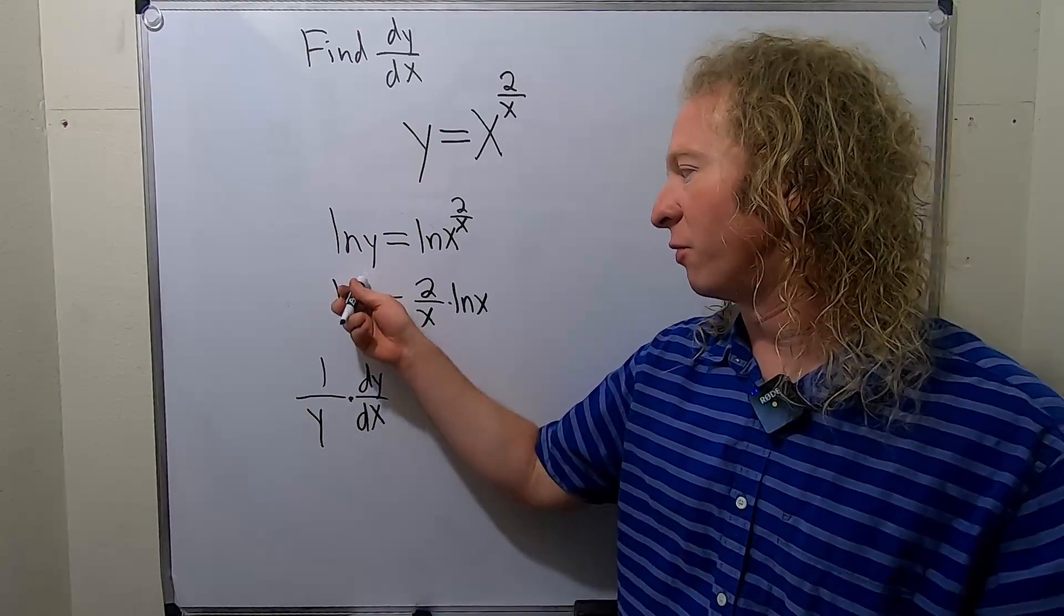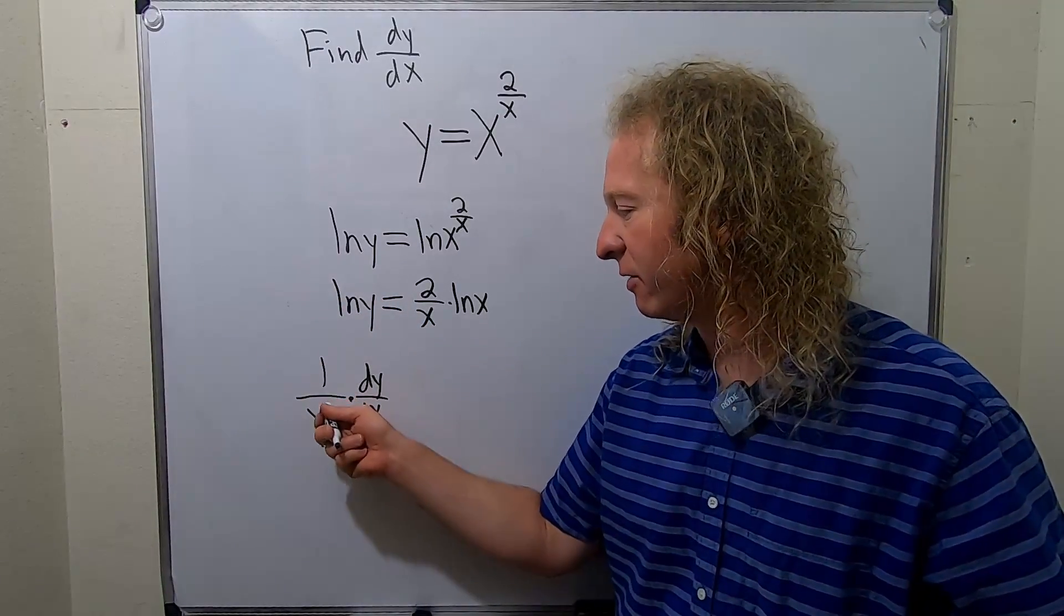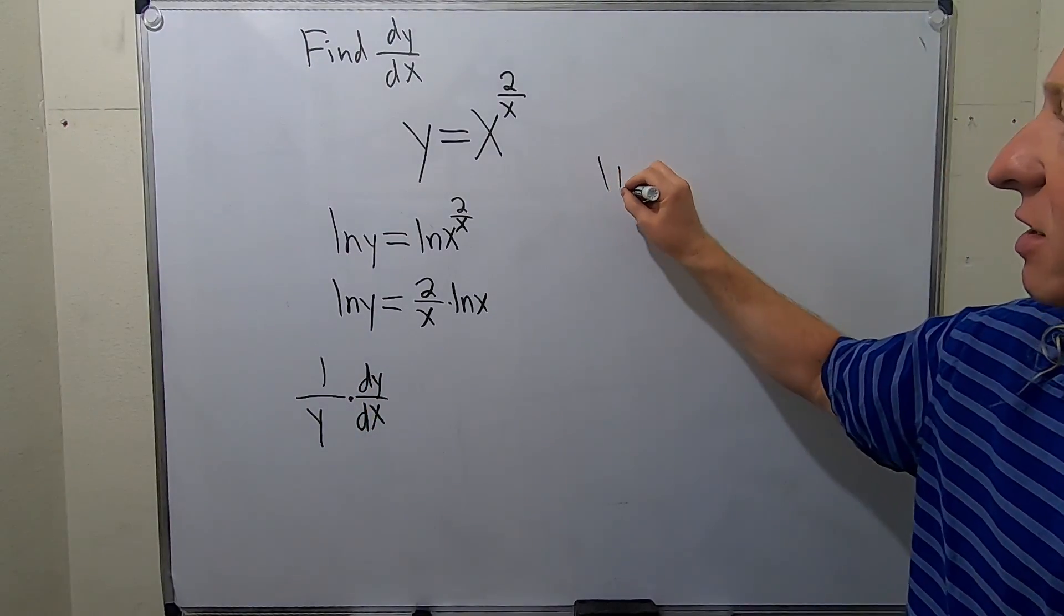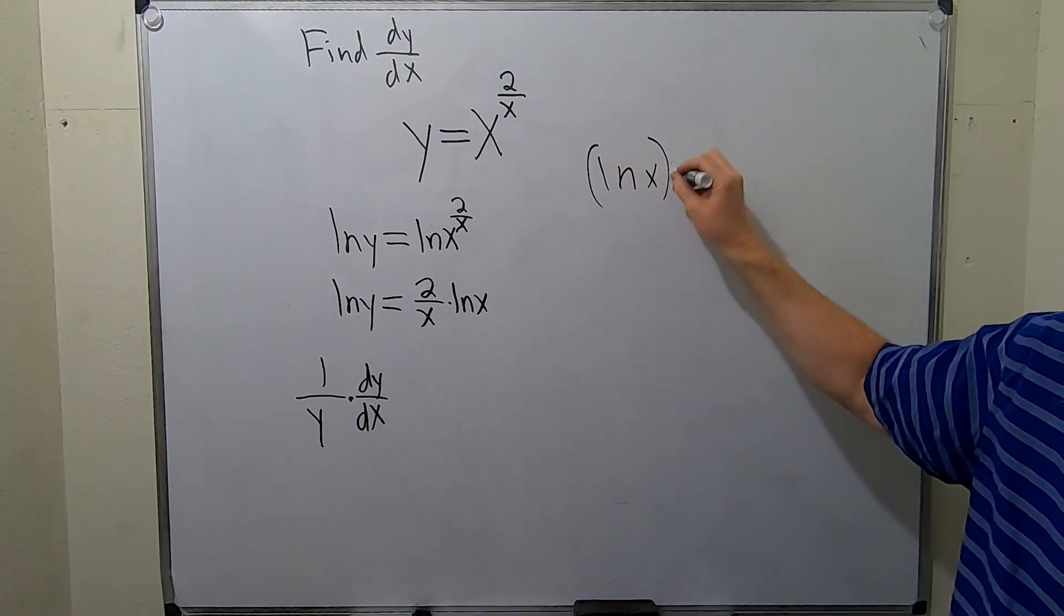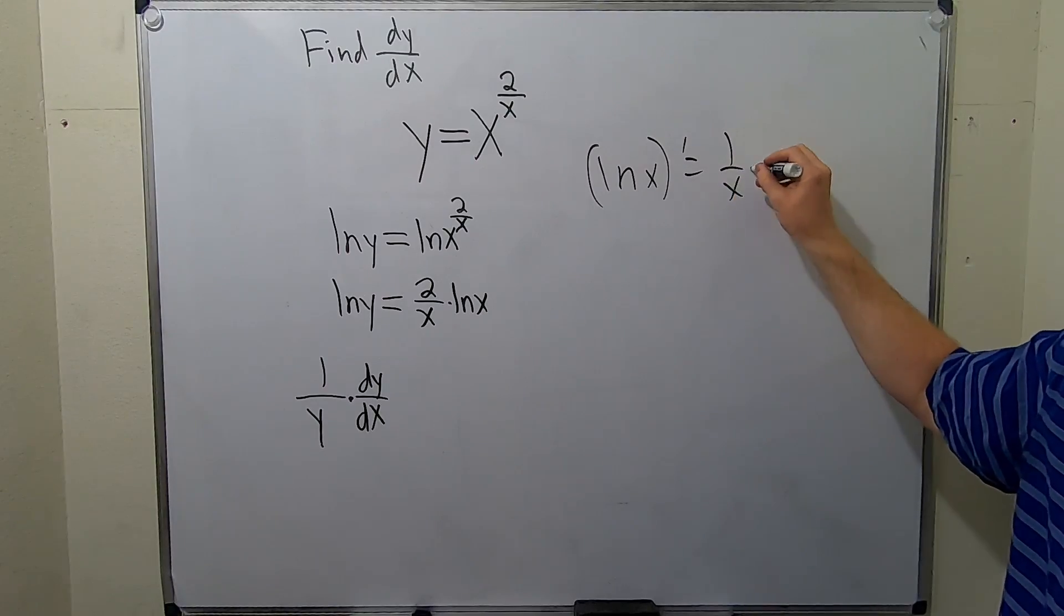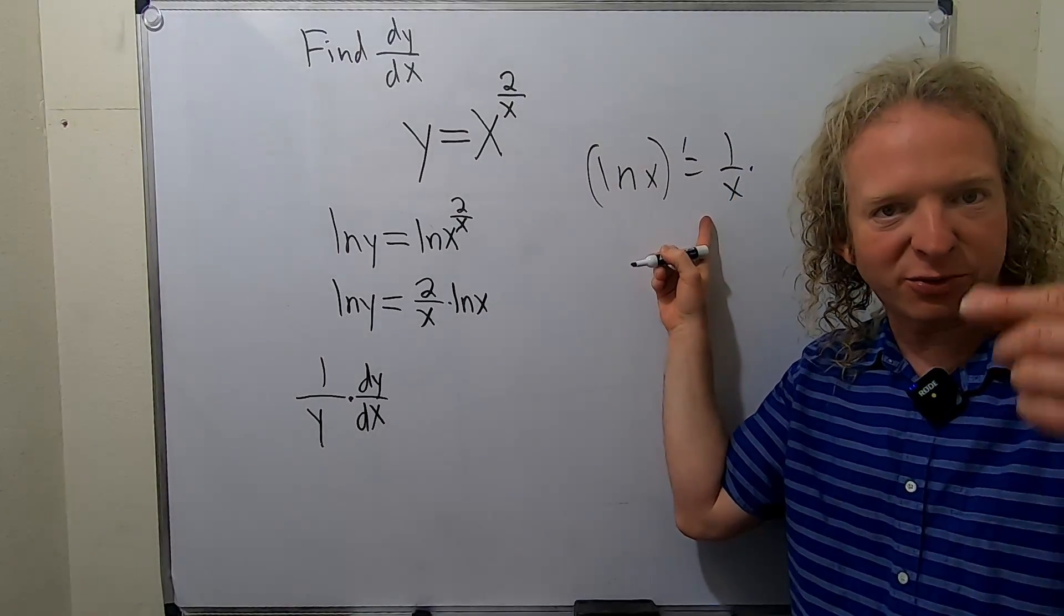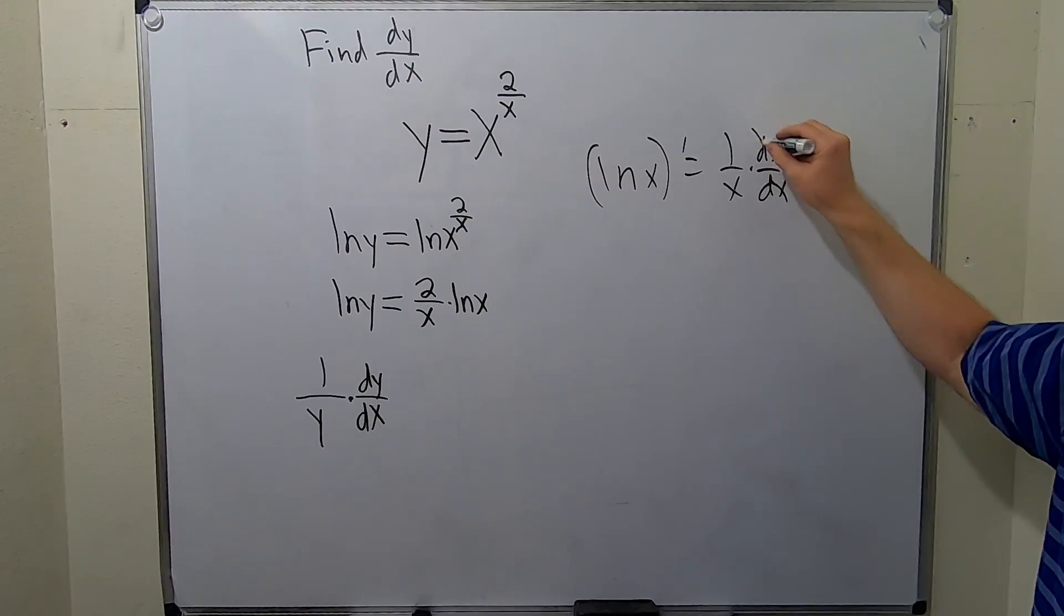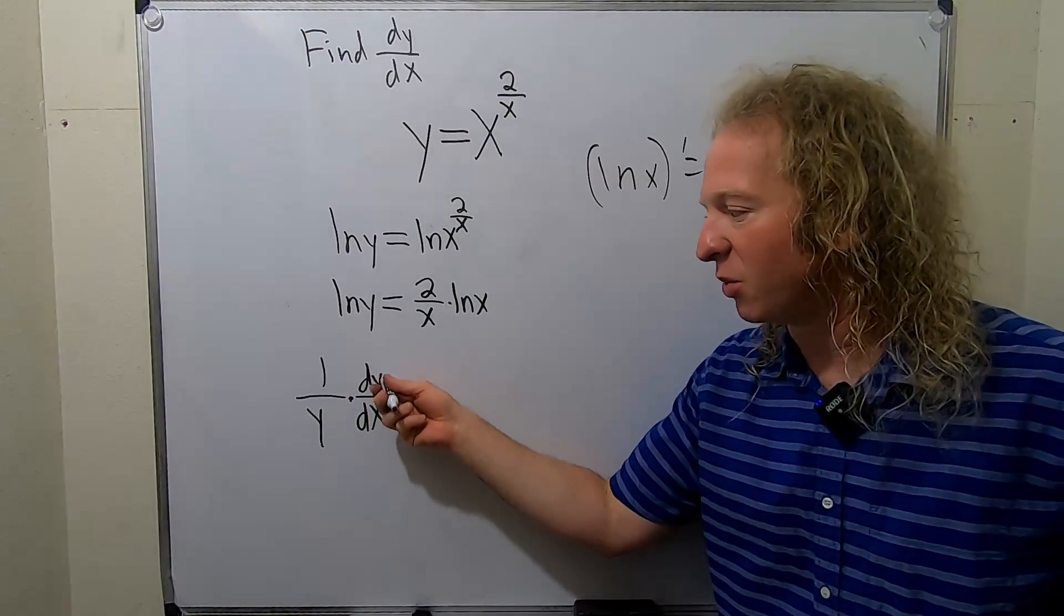Again, it's 1 over y times the derivative of y with respect to x, which is dy/dx. If it was ln x and you're taking the derivative with respect to x, it's 1 over x times the derivative of the inside with respect to x. That's just dx/dx, but we know dx/dx is 1, so you don't write it. Here it's dy/dx.